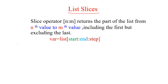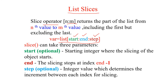Next, slicing is also a powerful operator. It uses the syntax n colon m within square brackets and returns a part of the list from the nth value to the mth value. This slice operator is available for any list. The syntax takes three parameters: start value, end value, and step value.